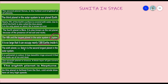The sixth planet is Saturn, which is the second largest planet in the solar system — first comes Jupiter, then Saturn as the second largest. Saturn is yellowish in color and has beautiful rings around it that are made up of ice and dust. So the rings of Saturn are made of ice and dust, and the planet itself is yellowish in color.